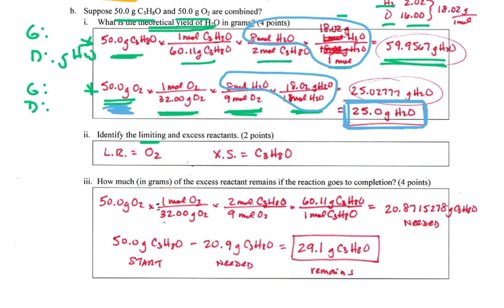So this one, the oxygen, is going to limit how much I can make. I can only have enough oxygen to make 25 grams of water, whereas I had enough of my C3H8O to make 59 grams of water. So the smaller answer is my real, true theoretical yield for this reaction. So identify now, this is just terminology. Who's the limiting, who's the excess reactant? Well, the chemical that gave me the smaller answer is my limiting reactant, so that's my oxygen. And the chemical that gave me the larger answer, that's my excess.